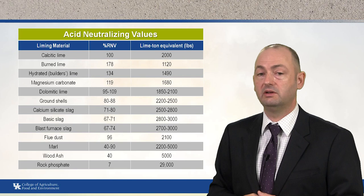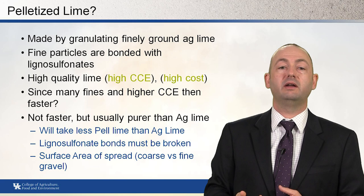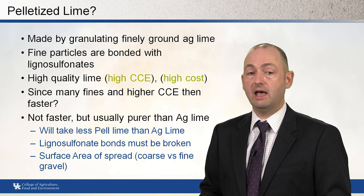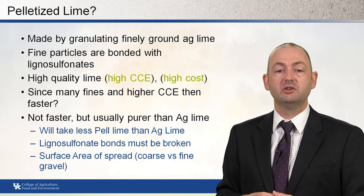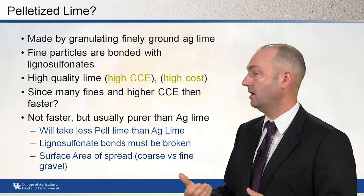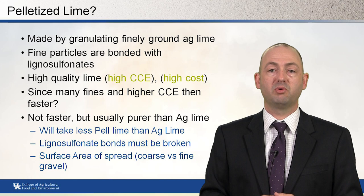Pelletized lime is made by granulating finely ground agricultural lime, with fine particles bonded using lignosulfates. It has a high CCE but also a high cost due to the additional handling of binding the particles together. Since it contains many fines, it is typically purer than ag lime, so less pelletized lime is needed to raise soil pH. However, from a reaction-time standpoint, the lignosulfate bonds must first be broken down, and the larger, coarser pellet surface area means it will not break down faster than ag lime.